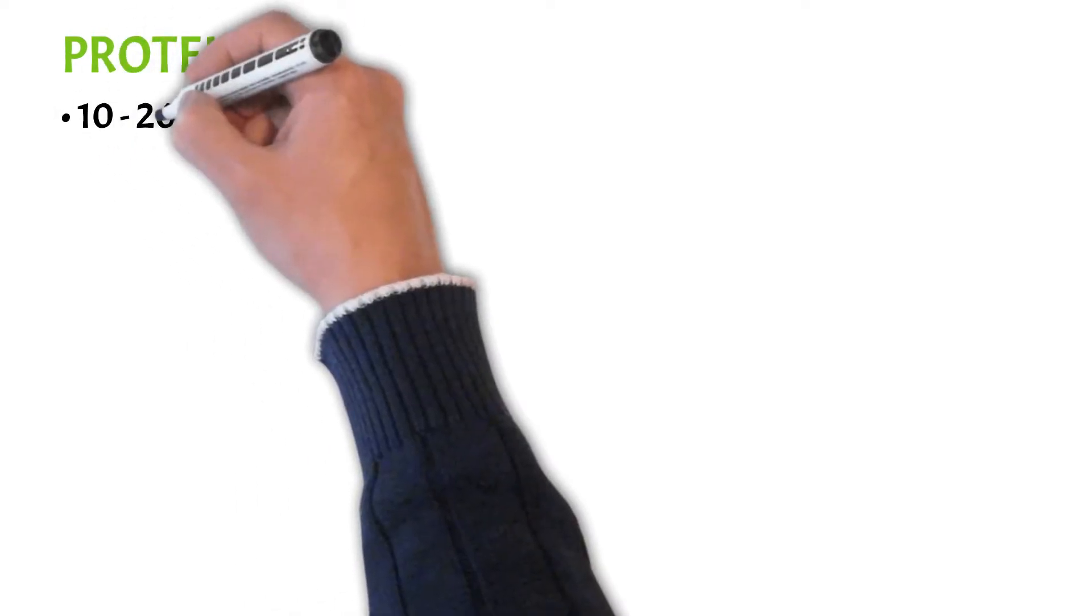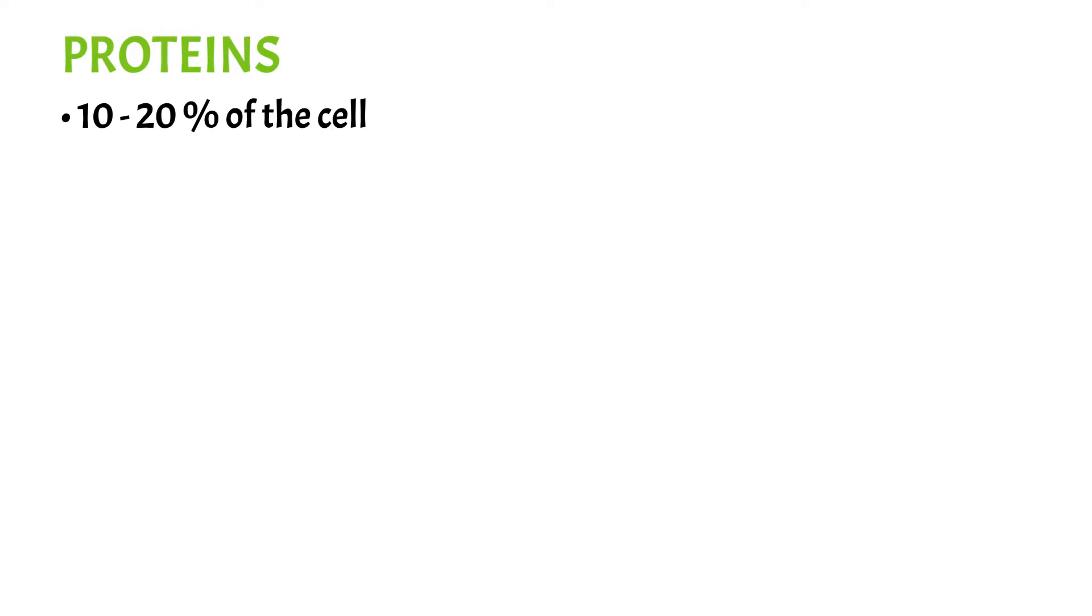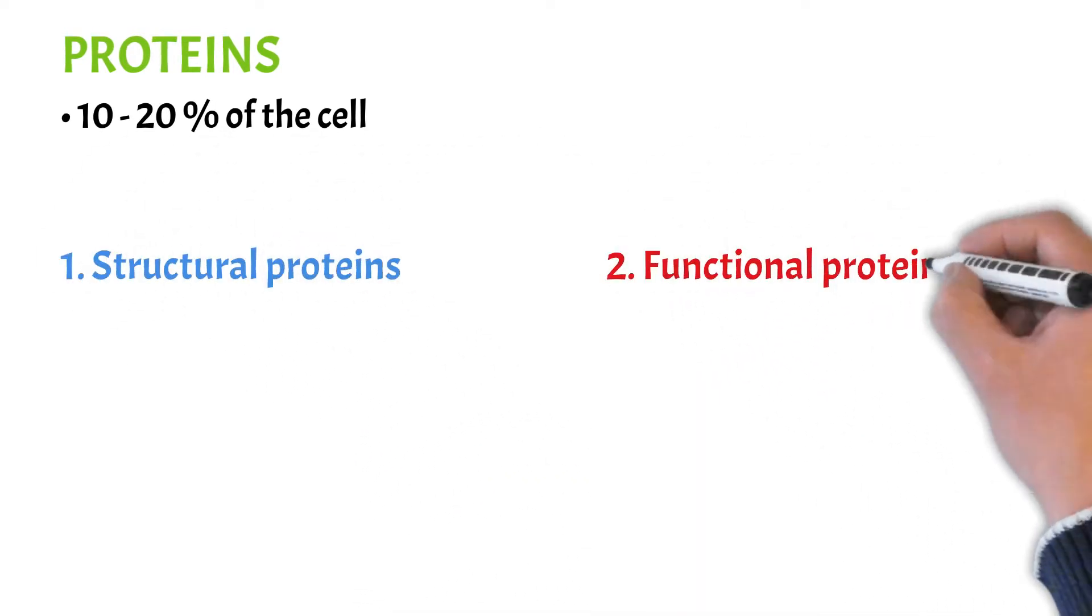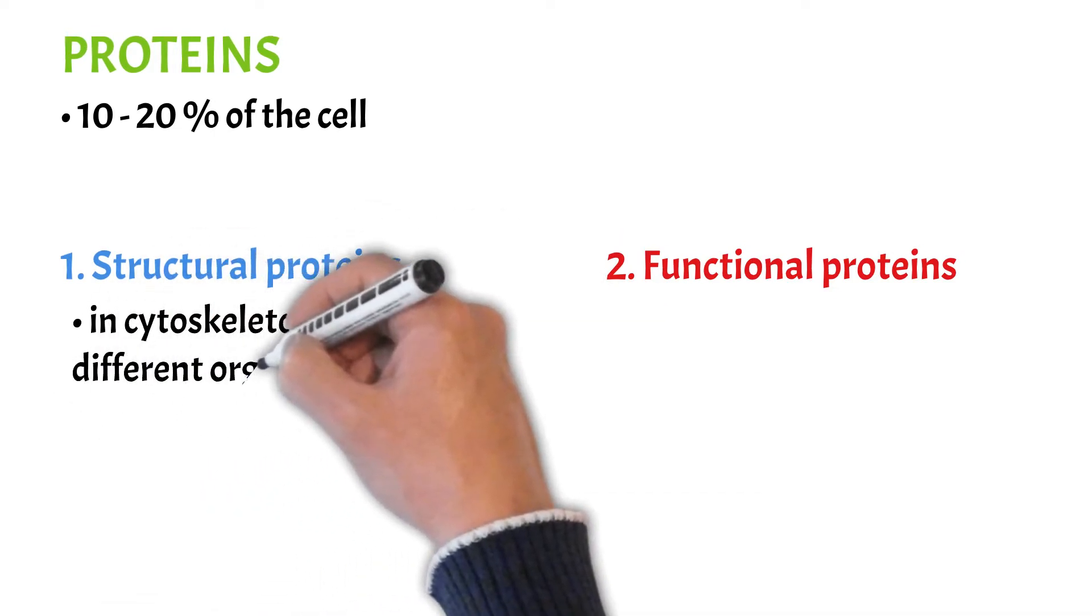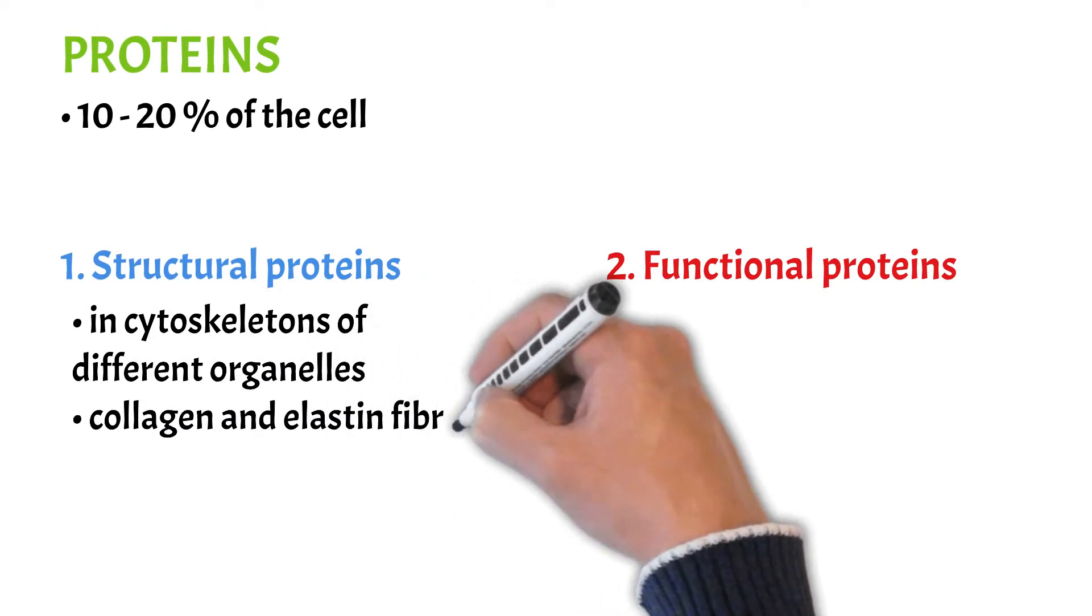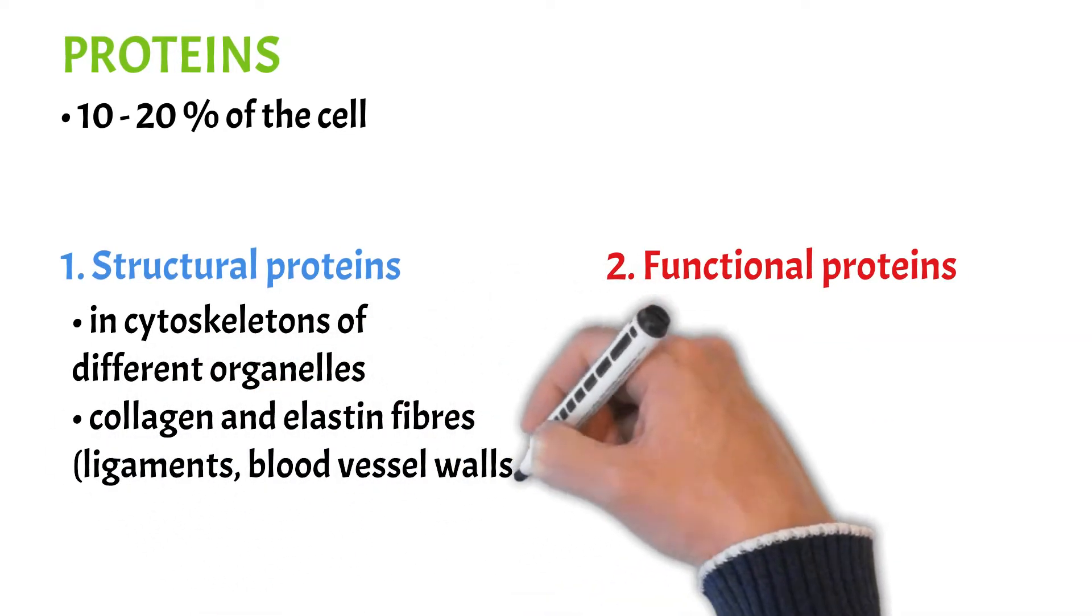Now let's look at proteins. Proteins represent 10 to 20 percent of the cell and are usually divided into two groups: structural proteins and functional proteins. Structural proteins usually form long filaments which provide the cytoskeletons of different organelles and they can be found in the form of collagen and elastin fibers in connective tissue and blood vessel walls, ligaments, etc.